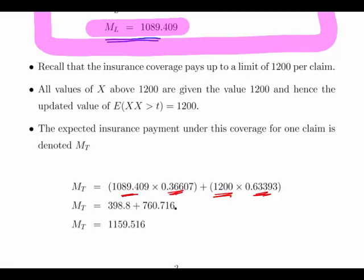Nothing changes over here. The mean for everybody under the threshold, the mean of all those claims, is still 1089.409 and it's still 36% of the claims are less than the threshold.